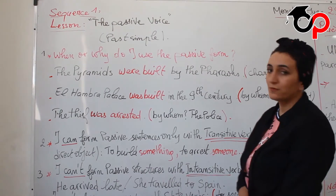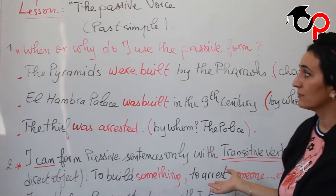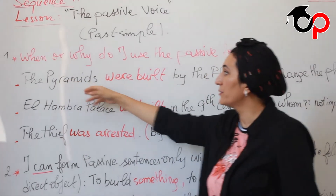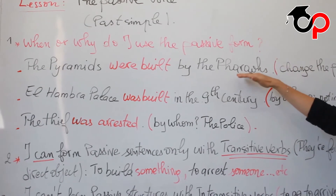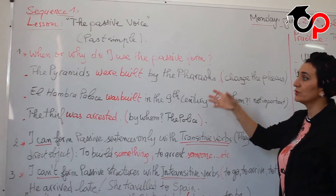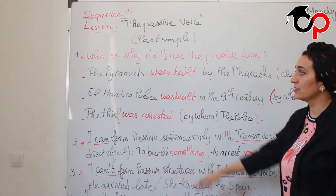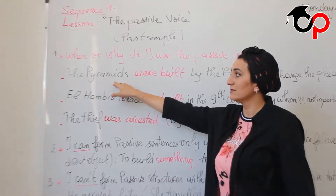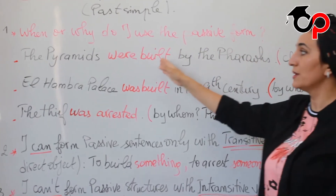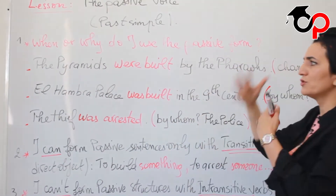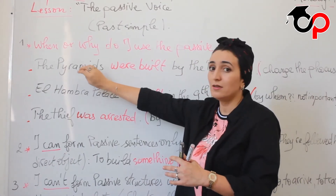Let's learn more about the passive voice. When or why do I use the passive form? First example: 'The pyramids were built by the pharaohs.' We just want to put the focus on the pyramids, which are the direct object of the active sentence — 'the pharaohs built the pyramids.' I just want to change the focus and put the pyramids in the front; it becomes the subject.